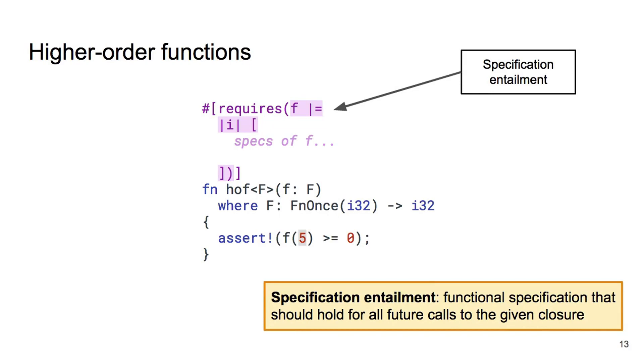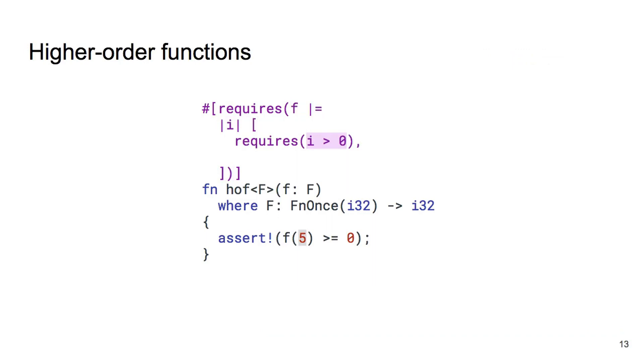In this case, we will add a precondition to F that says it can only be called with a positive argument. And we add a postcondition that says the values it returns will also be positive. Referring only to the properties given in the specification entailment, we can prove the assertion in HOF. The argument 5 is positive, so the call can be made, and we know the result is positive, so it must be greater or equal to 0.